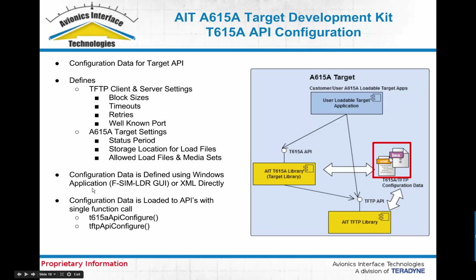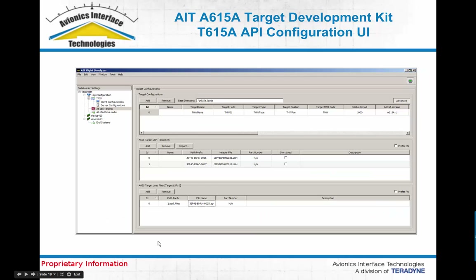This configuration data is defined using a Windows application — the same GUI we use for our data loaders — or you can also define this data in XML directly. The APIs provide a simple single function to load that information from those files into the API. As shown in the snapshot here, you can create multiple targets; for each target you can define the target ID and position, the status period, and which version of the protocol it is compliant with.